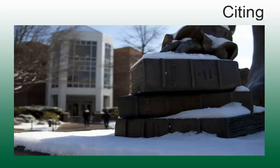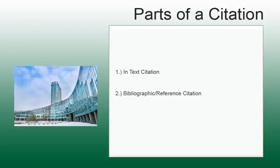Citing is the process of giving credit to the sources you used in your research and the way to avoid plagiarism. Citing means to state where you found the information so others can find the exact item again. Each citation contains two parts: the in-text citation, which identifies what information from your paper or project is from someone else, and the bibliographic or reference citation, which identifies where you found the information.